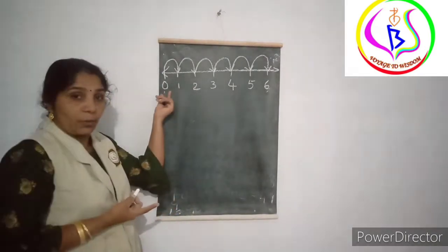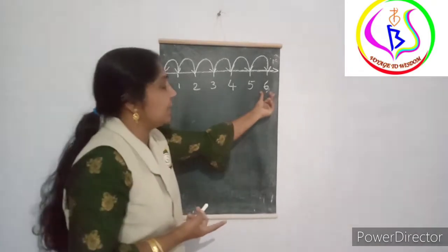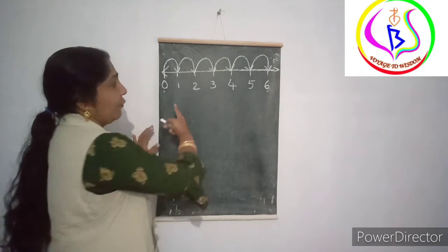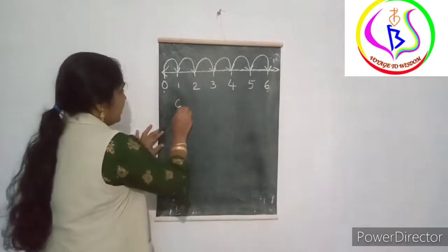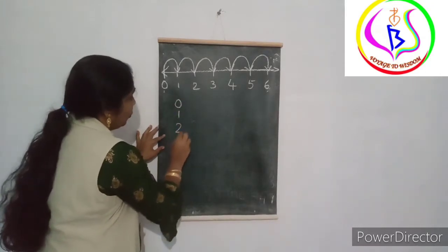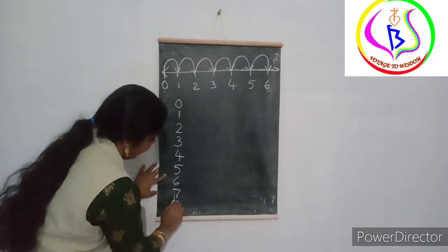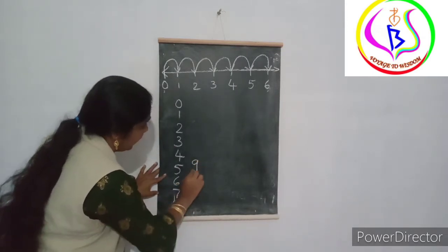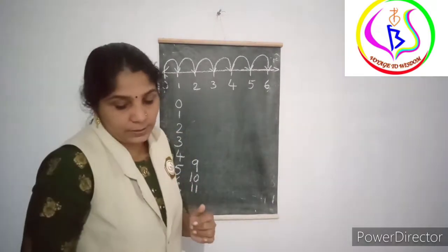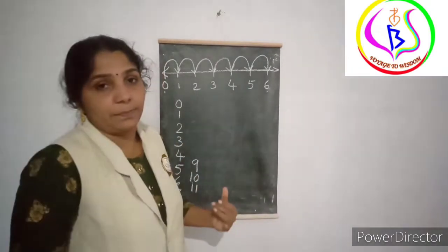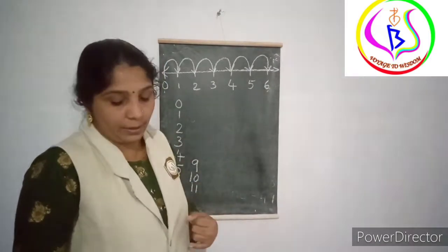This number line starts with 0. Zero is the smallest number in this number line and 6 is the greater number in this number line. This is forwarding numbers — numbers that are increasing in order.